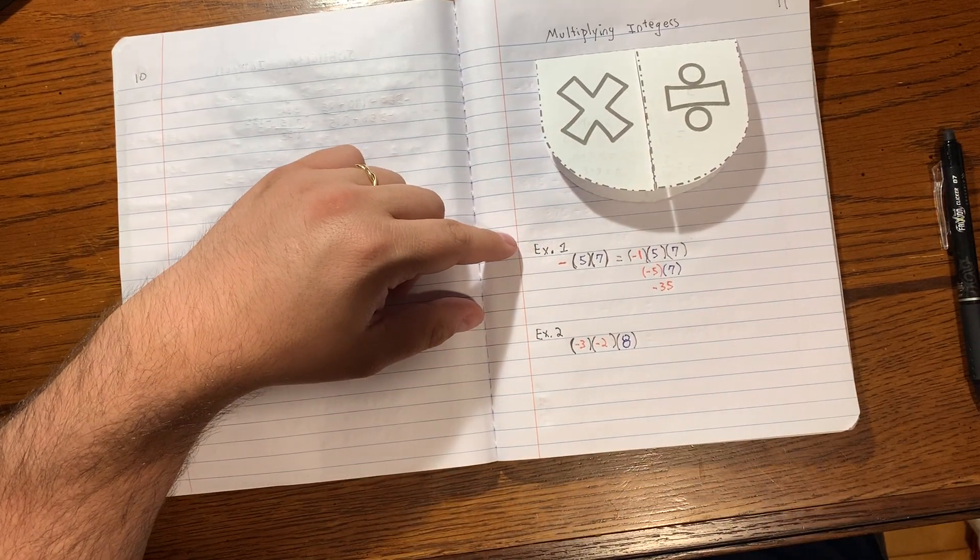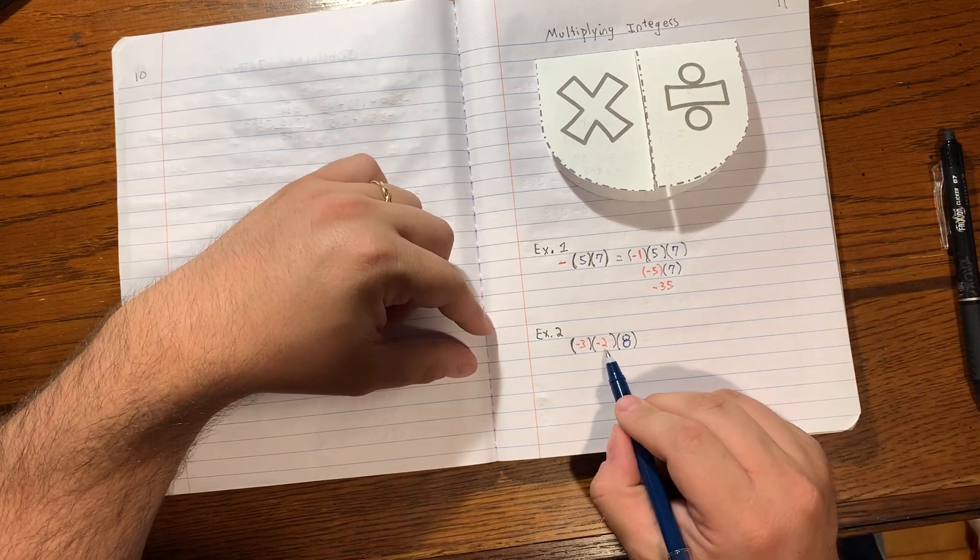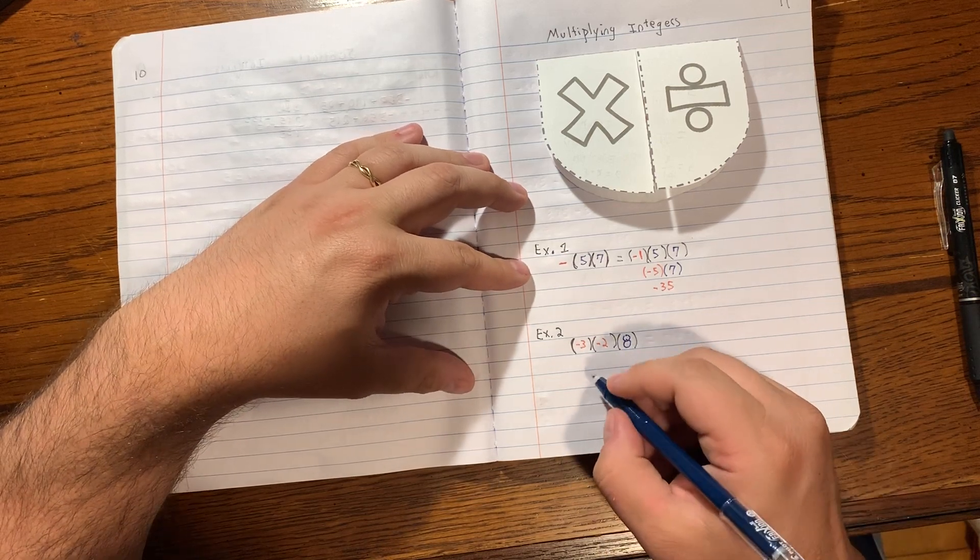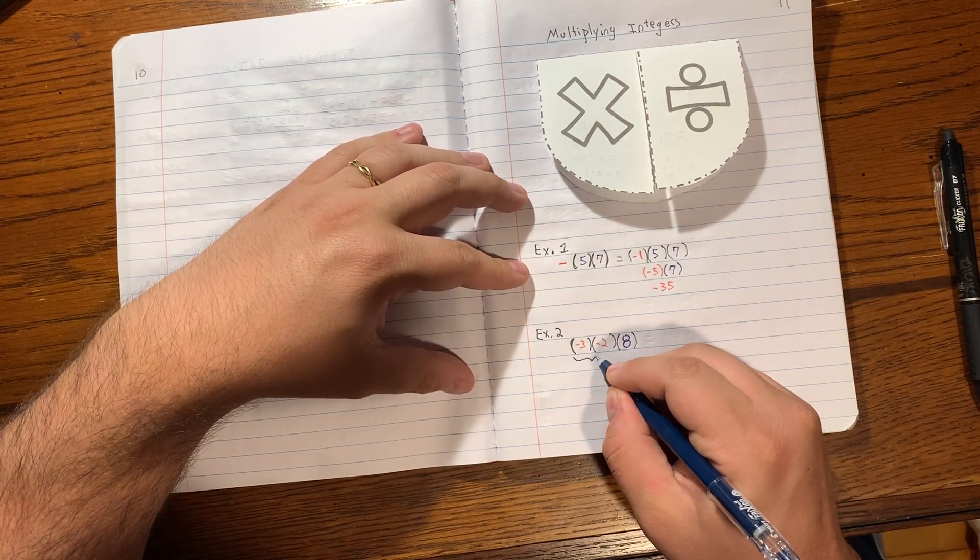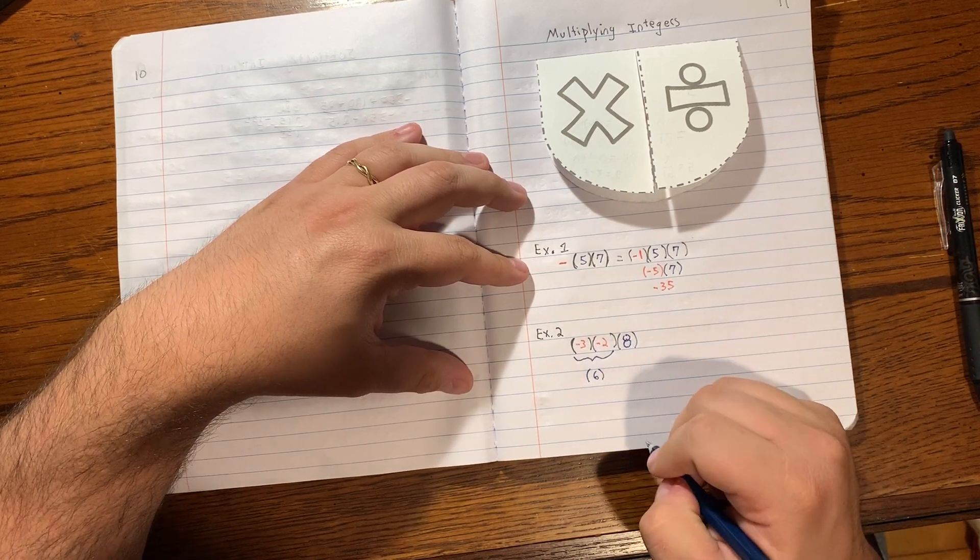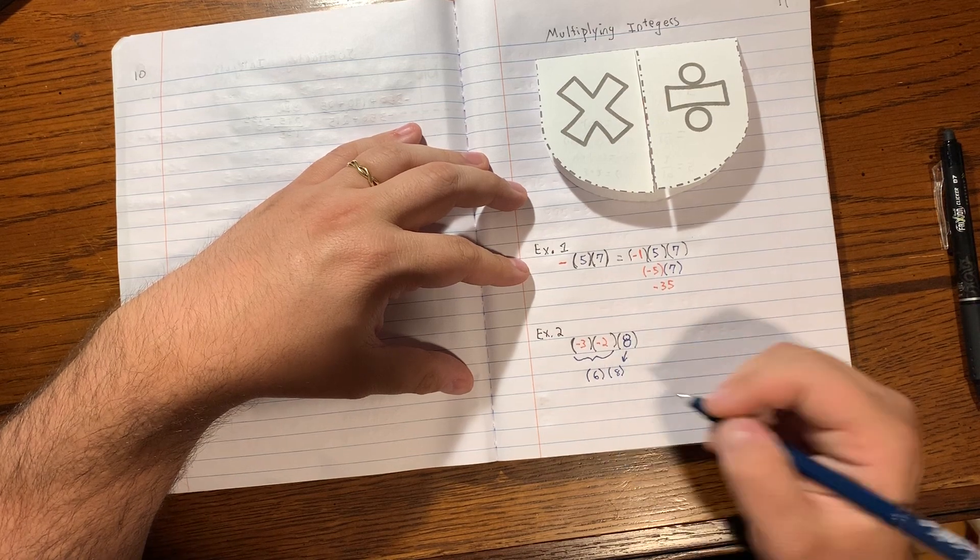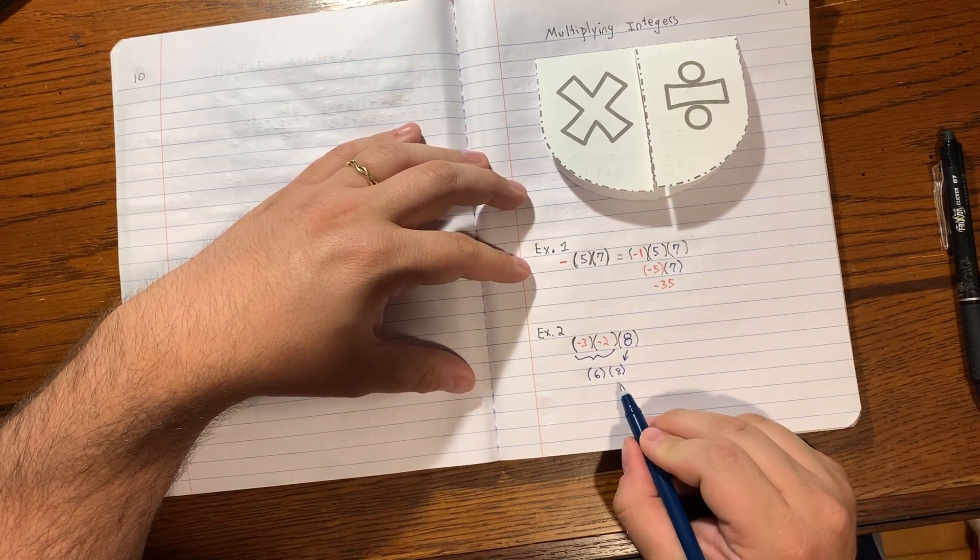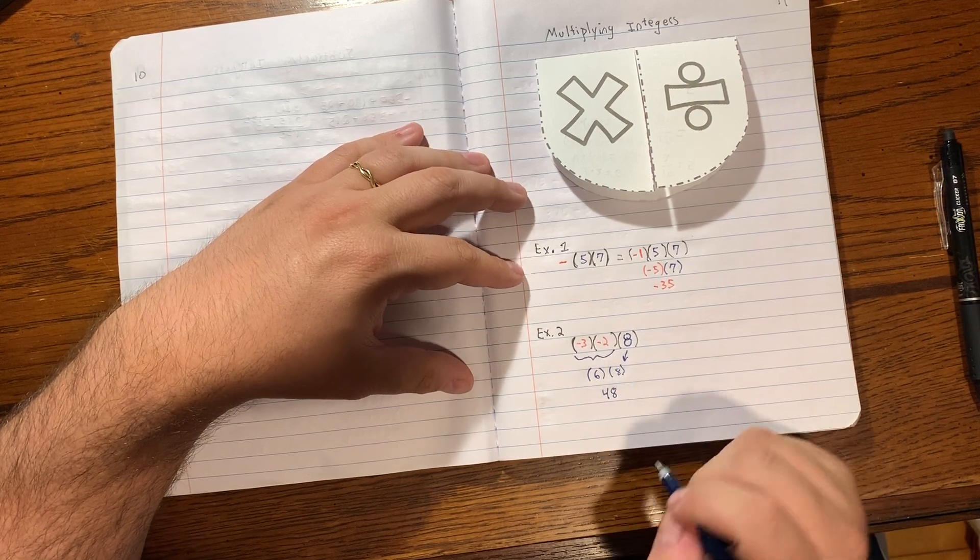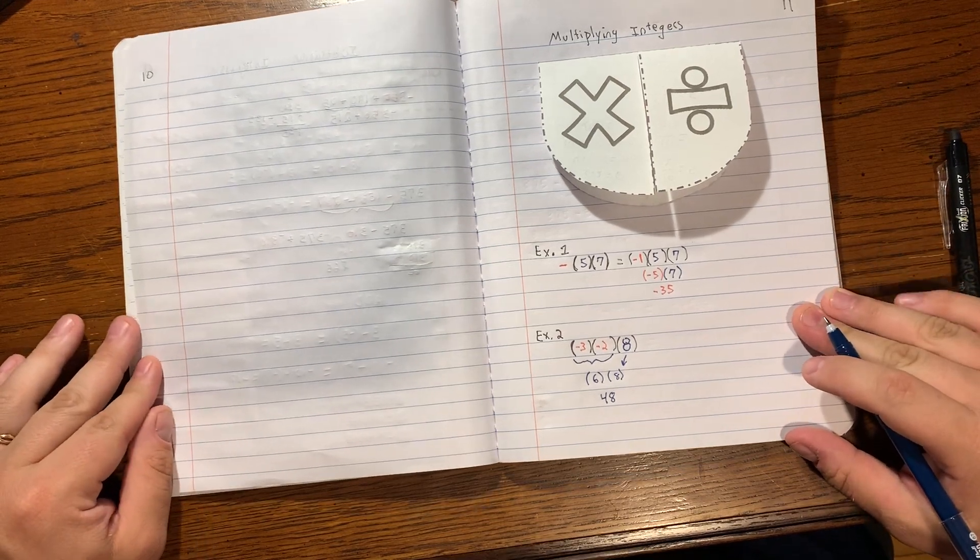And on to example two, again we have three so we're gonna do two at a time. You've got a negative times a negative, so negative three times negative two, that actually makes a positive six. And we're multiplying that by positive eight. And a positive times a positive is a positive, and six times eight is 48. So those are your two examples that go with this lesson.